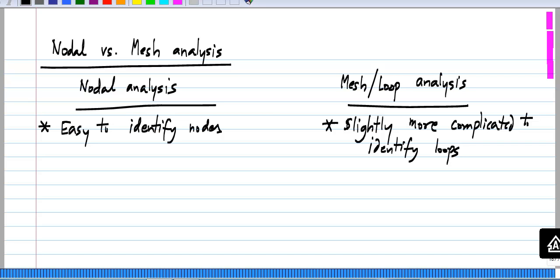Now one case where, especially for hand analysis, mesh analysis may be more useful is that you visibly see that there are a small number of loops, but each loop has a number of components in series.